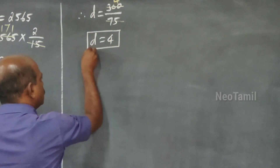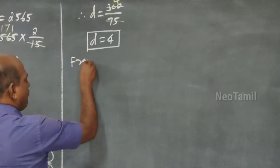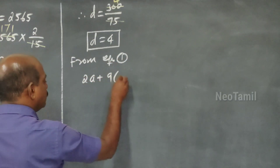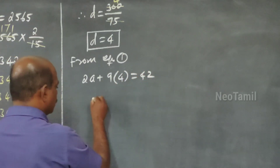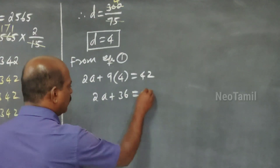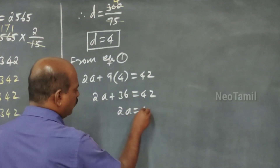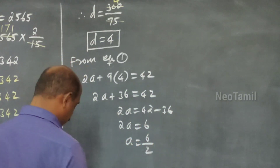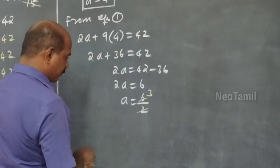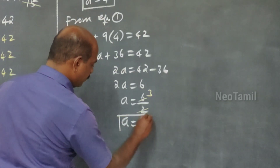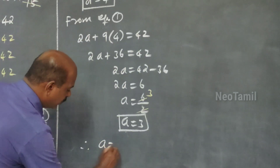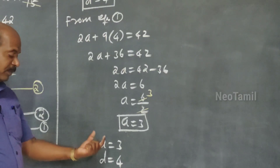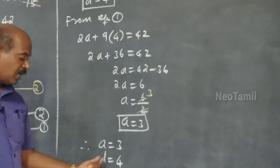Now substituting d = 4 into Equation 1: 2a + 9(4) = 42, so 2a + 36 = 42, giving 2a = 6, therefore a = 3. So we have two values: a = 3 and d = 4. That means the first term of the arithmetic progression is 3 and the common difference is 4.